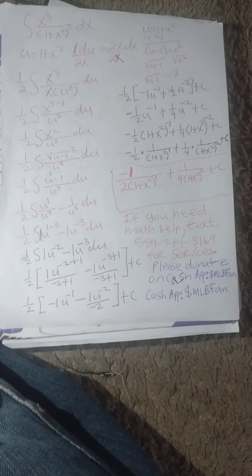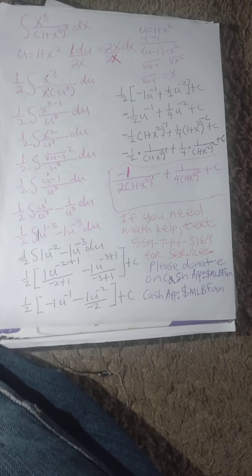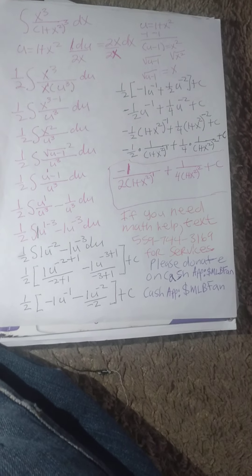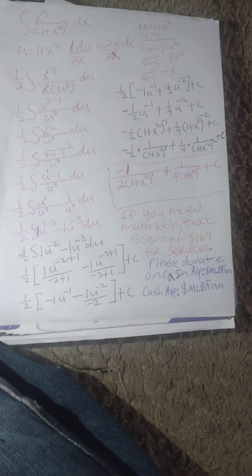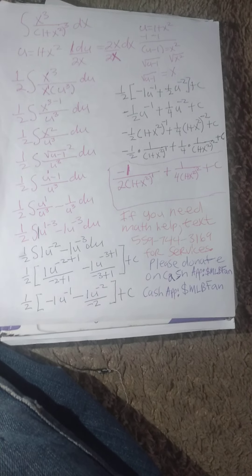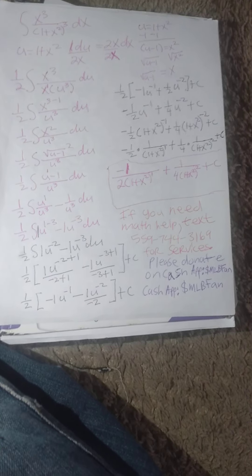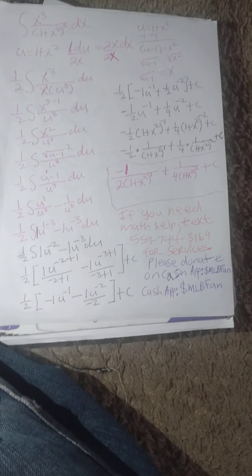And then we bring u to the third to the numerator using laws of negative exponents. So, we will have 1 half times the integral of 1u to the 1 minus 3 minus 1u to the negative third du. This will simplify to 1 half times the integral of 1u to the negative second minus 1u to the negative third du.